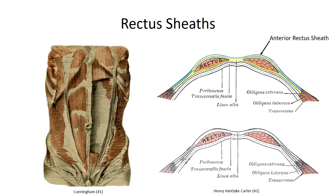The aponeurosis from the transversus abdominis runs posterior to the rectus abdominis, fusing with the posterior division of the internal oblique to form the posterior rectus sheath. On the medial border of the rectus abdominis, the anterior and posterior rectus sheaths fuse with one another and ultimately with the fused rectus sheaths from the contralateral side. This midline fusion is so thick it has a distinct white appearance from the external surface — anatomists refer to it as the linea alba, or white line.